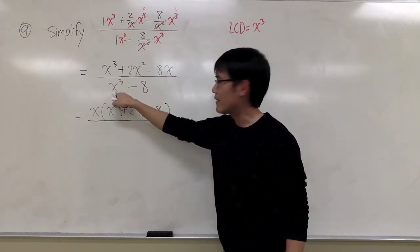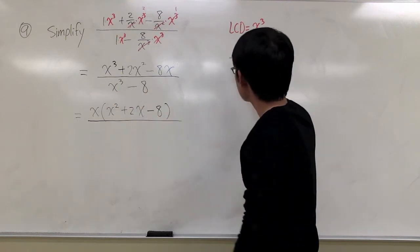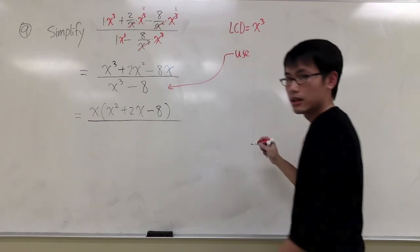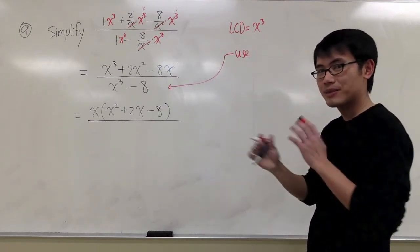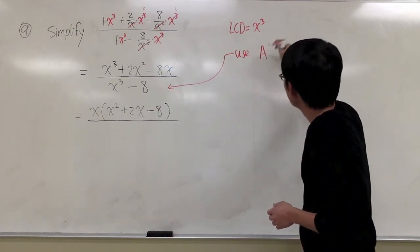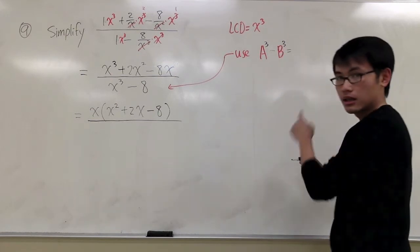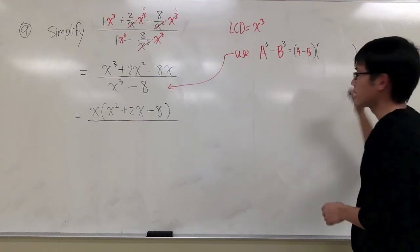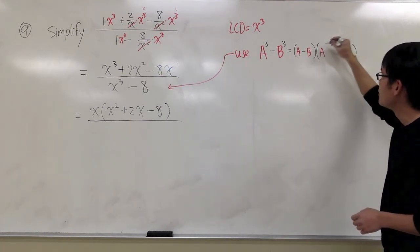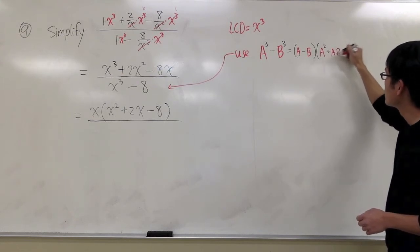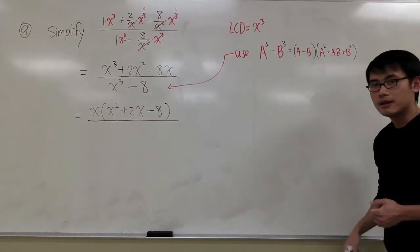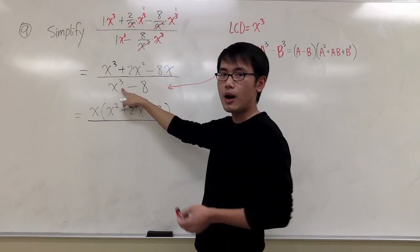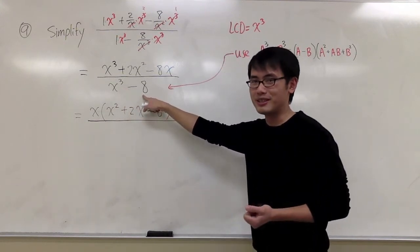On the denominator, we have x to the third power minus 8. For this one, we are going to use the factoring formula for the difference of two cubes. The formula is: a to the third power minus b to the third power equals (a minus b)(a squared plus ab plus b squared). We use this because 8 happens to be 2 to the third power.